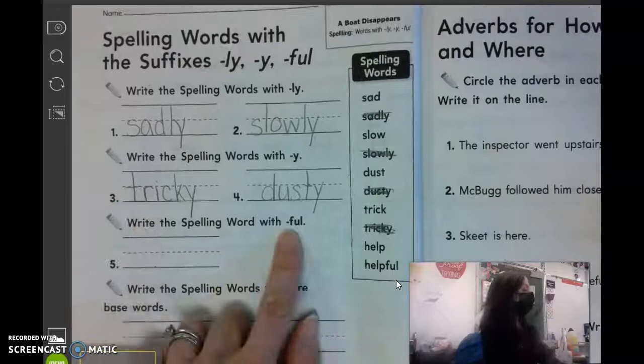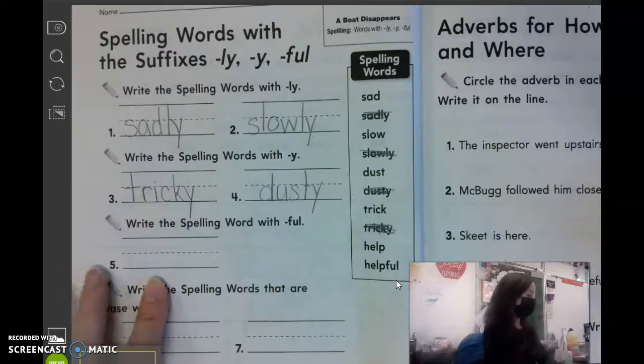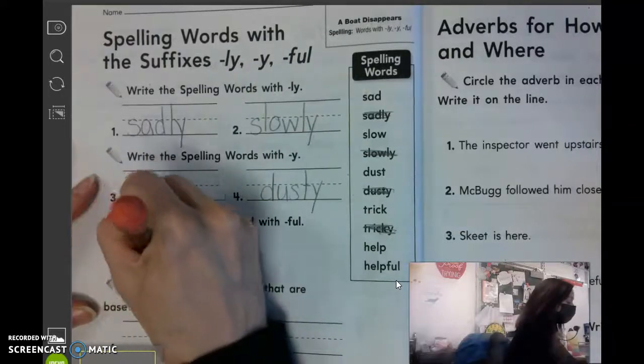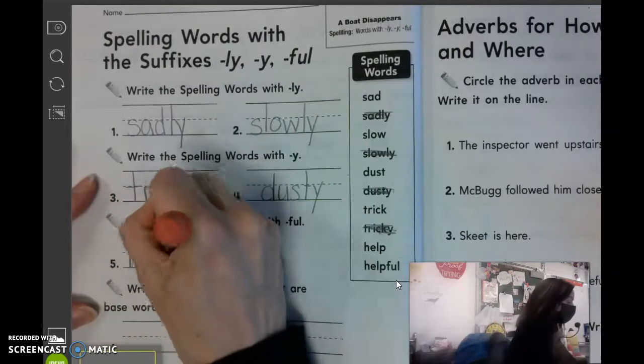Write the spelling word with F-U-L on number five. Amelia? Helpful. Good.